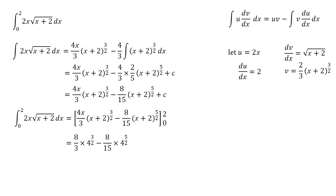We're then going to subtract the same expression, but with 0 substituted in. So the first term begins with 4x over 3. So if we put 0 into that, that just becomes 0. And the second term becomes 8 fifteenths times 2 to the power of 5 over 2.